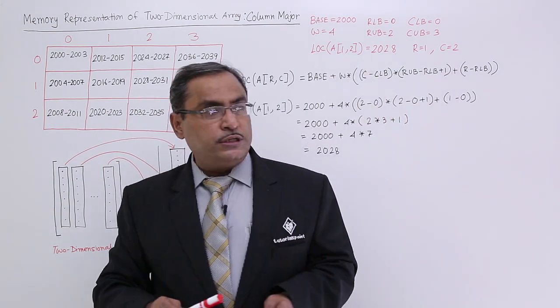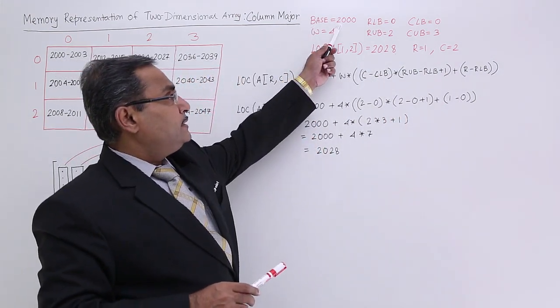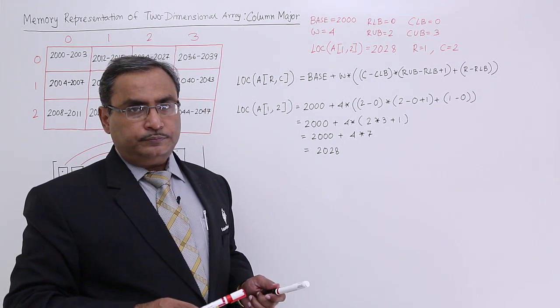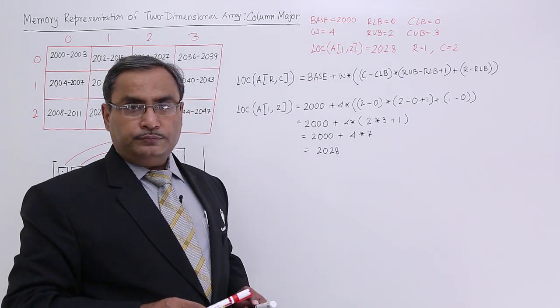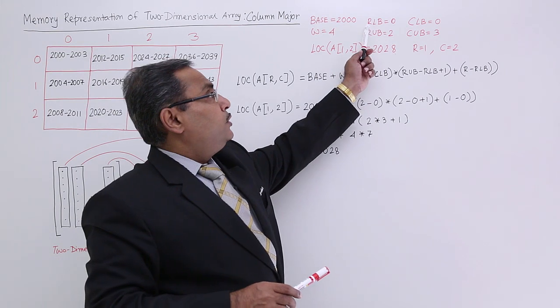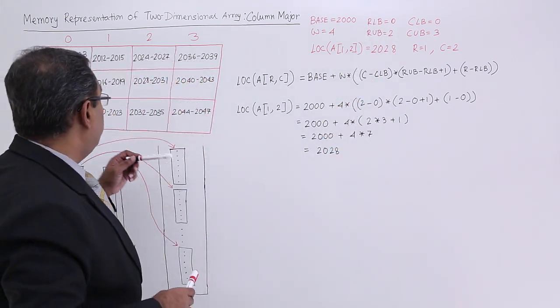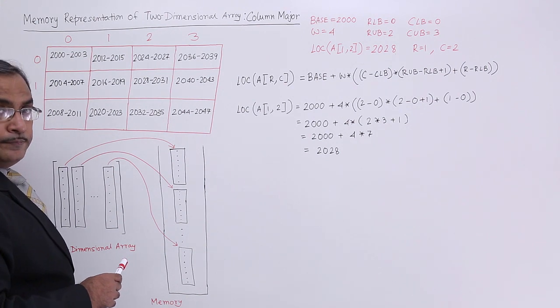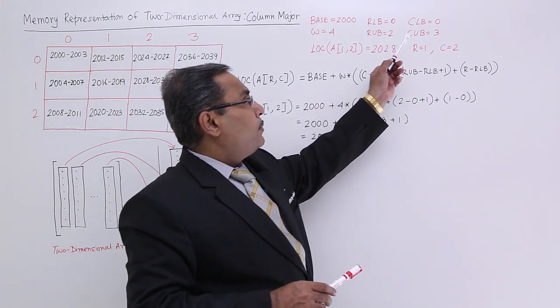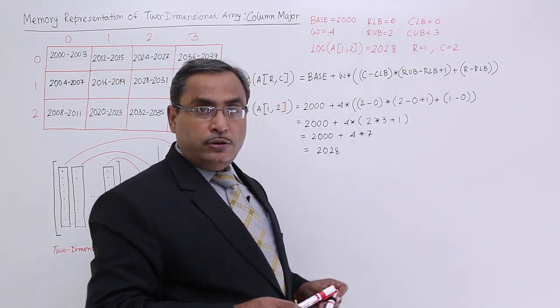In this particular diagram, we have considered base address is equal to 2000, W is equal to 4, row lower bound is 0, row upper bound is equal to 2 accordingly. Column lower bound is equal to 0, column upper bound is equal to 3.